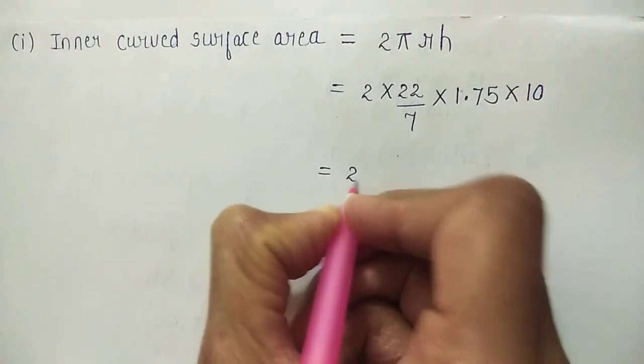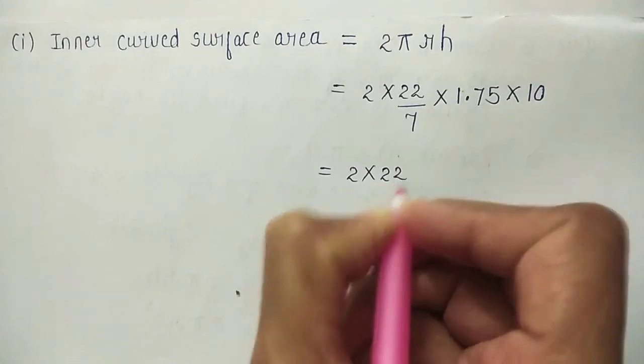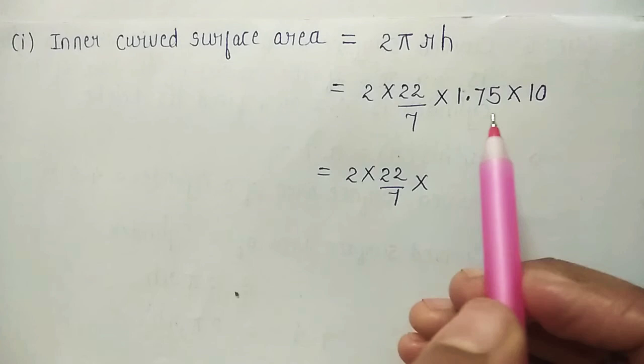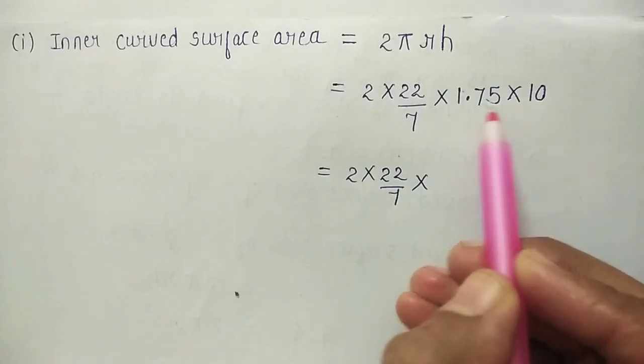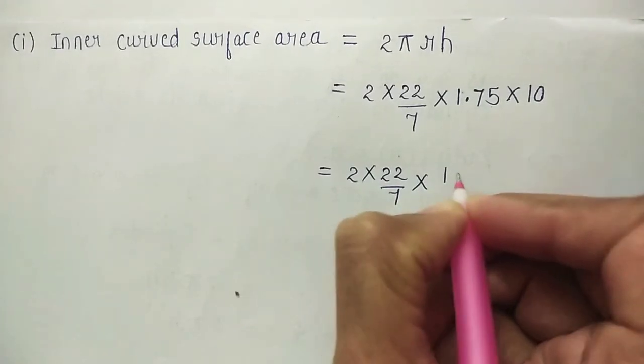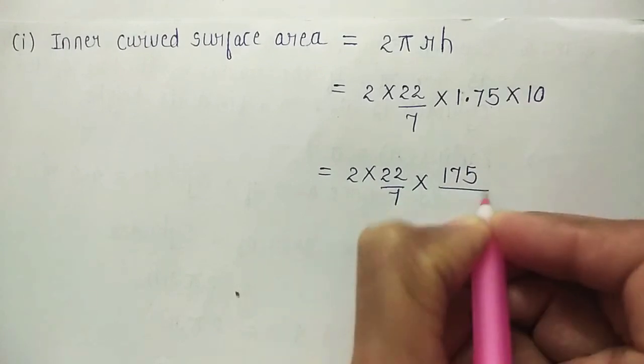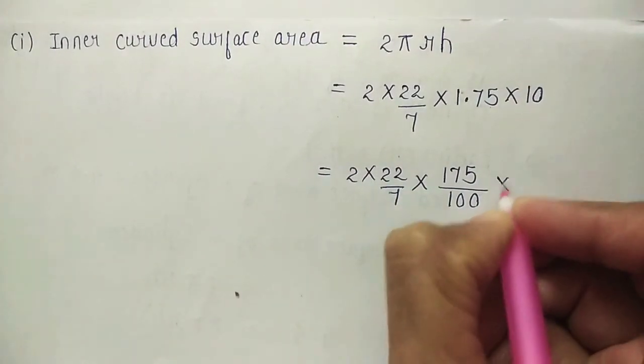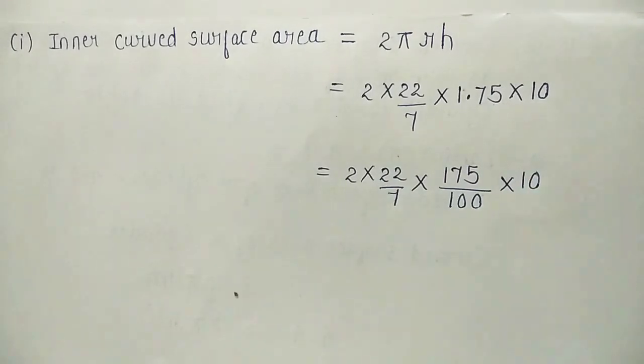So, next step will be 2 into 22 divided by 7. We will remove this decimal point. After 2 digits, we have decimal point. So, when we remove in the denominator, we will write 100 multiplied with 10. Now, we will simplify it.